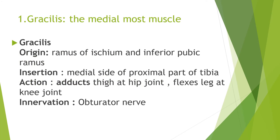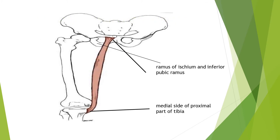The gracilis is the most medial muscle. It originates from the ramus of the ischium and the inferior pubic ramus, and it is inserted on the medial side of the proximal part of the tibia. Its actions are: it adducts the thigh at the hip joint, flexes the leg at the knee joint, and it is innervated by the obturator nerve.